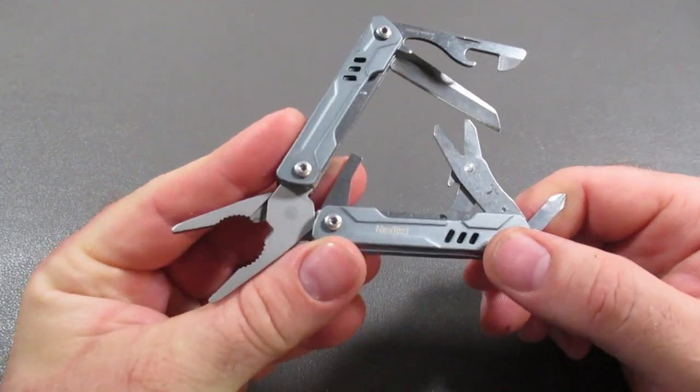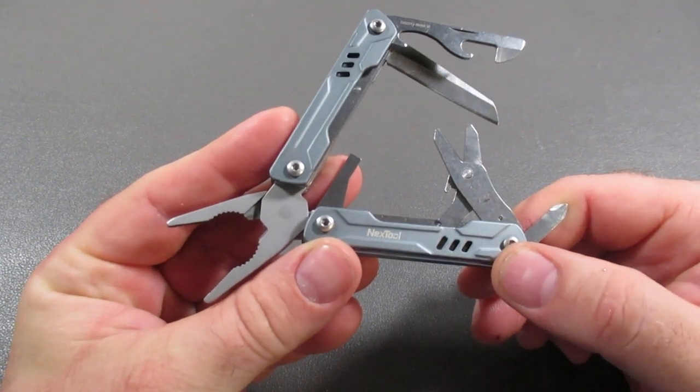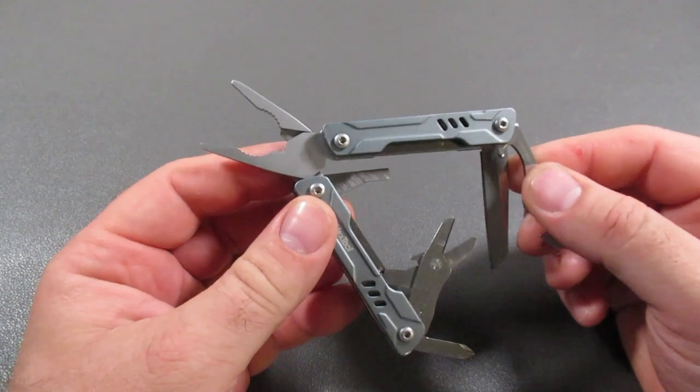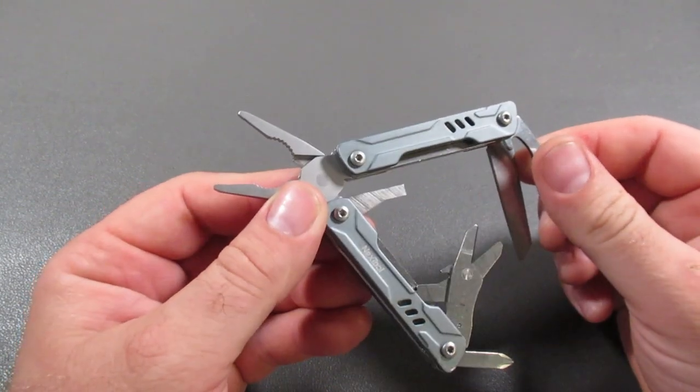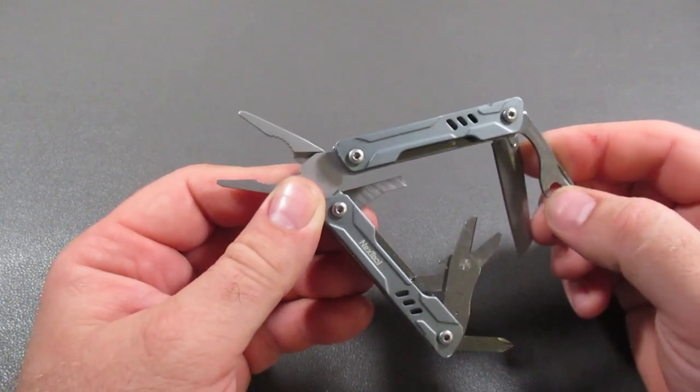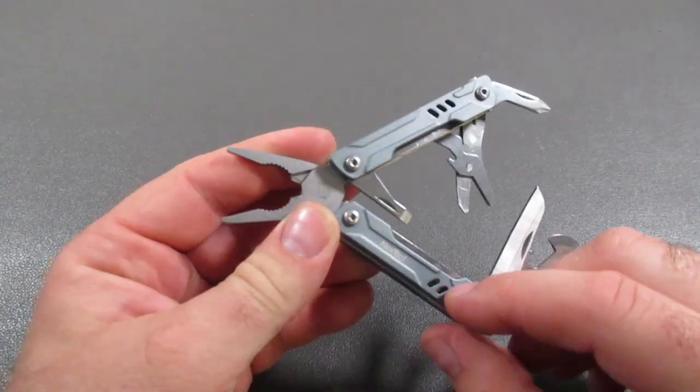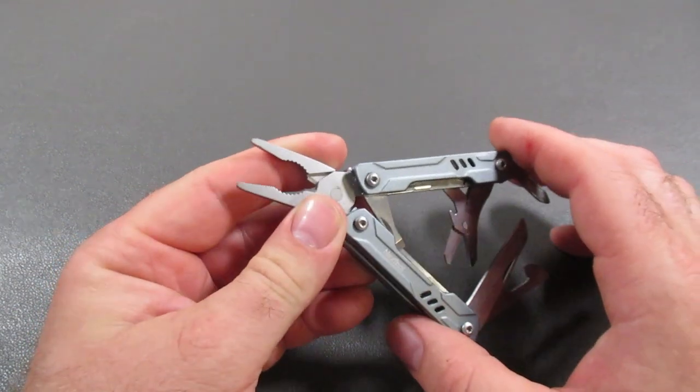This product right here is the Nextool Mini Sailor. It has the scissors, the knife, and some other great tools. I actually enjoy carrying this more than the Mini Flagship with the huge set of scissors. I feel like this is more streamlined, compact, and fits my needs better.